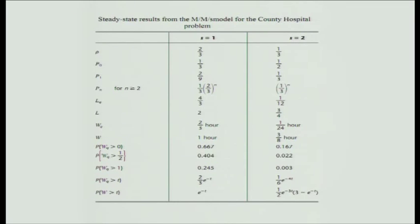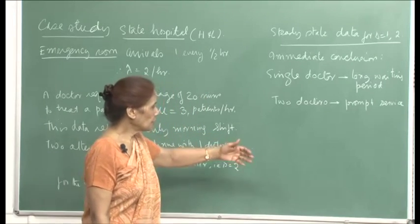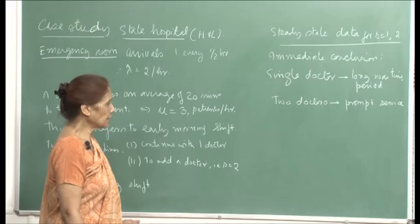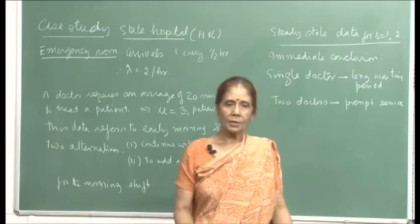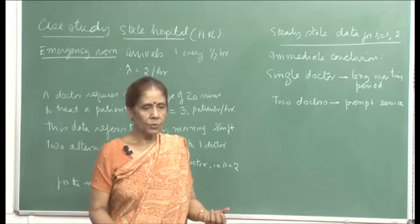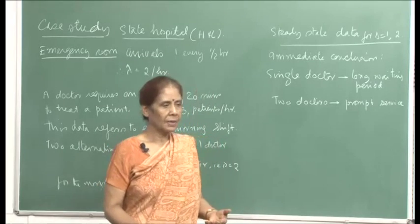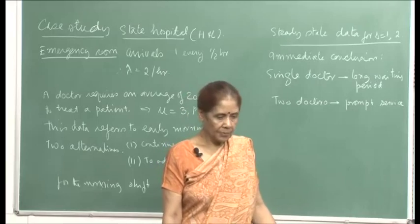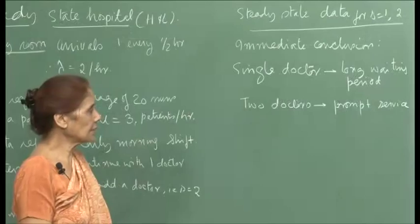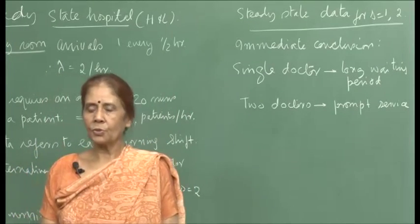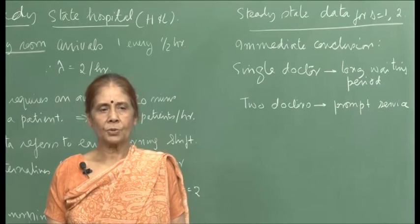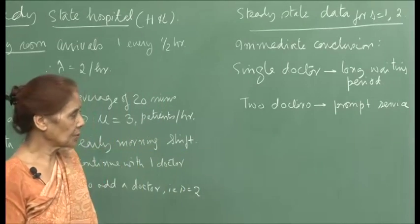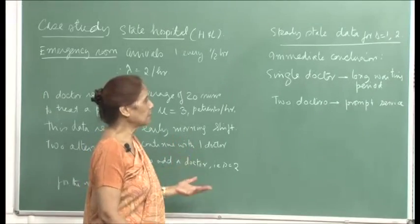To summarize the pooling principle: when waiting time is the main consideration, pooling will always help. The businessmen example showed letters waited longer with separate secretaries than with a pooled service. Unless legislation requires separate queues, pooling is the answer to avoiding long delays. The model helped us arrive at this conclusion with quantitative support.